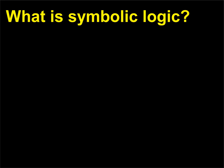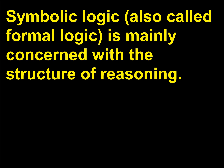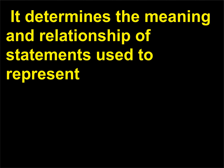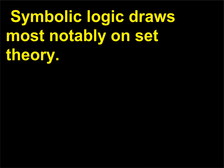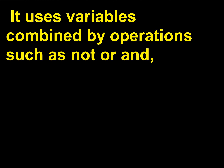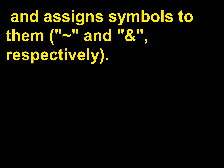What is symbolic logic? Symbolic logic, also called formal logic, is mainly concerned with the structure of reasoning. It determines the meaning and relationship of statements used to represent specific mathematical concepts and provides a means to compose proofs of statements. Symbolic logic draws most notably on set theory. It uses variables combined by operations such as NOT or AND, and assigns symbols to them — ¬ and ∧, respectively.